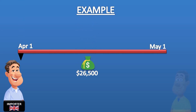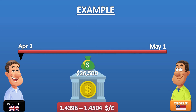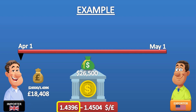Let's take an example. A UK importer knows on the 1st of April that they must pay a foreign seller $26,500 in one month's time, on the 1st of May. They can arrange a one-month forward exchange contract with the bank on the 1st of April, whereby the bank undertakes to sell the importer $26,500. The bank's forward rate for one month is 1.4396 to $1.4504 per British pound. Because the importer is buying dollars and the bank is selling the dollars, the appropriate rate is 1.4396. The UK importer can be certain that whatever the spot rate is on the 1st of May, they will have to pay at this forward rate. The cost in pounds will be $26,500 divided by 1.4396, making £18,408.